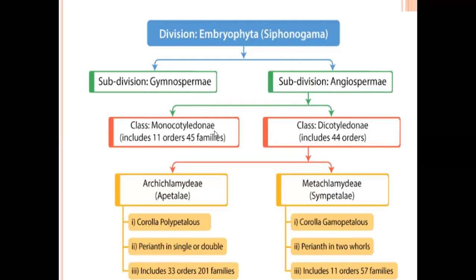Monocotyledonae characters: embryo contains a single cotyledon or seed contains a single cotyledon; leaves show parallel venation; trimerous flowers; adventitious or fibrous root system. The Monocotyledons are classified into 11 orders and 45 families.